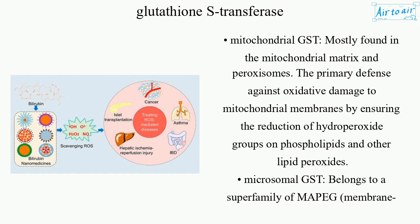Mitochondrial GST: mostly found in the mitochondrial matrix and peroxisomes. It serves as the primary defense against oxidative damage to mitochondrial membranes by ensuring the reduction of hydroperoxide groups on phospholipids and other lipid peroxides.